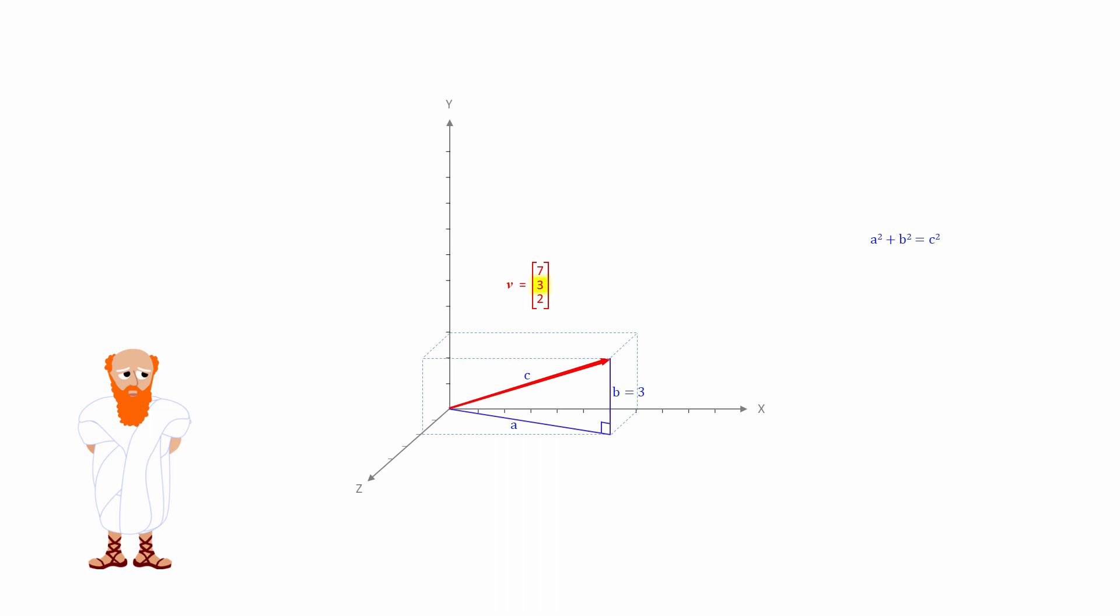Well, we know that B is equal to 3 because B is the height of this triangle, which is the Y component of the vector. So A squared plus 3 squared is equal to C squared.